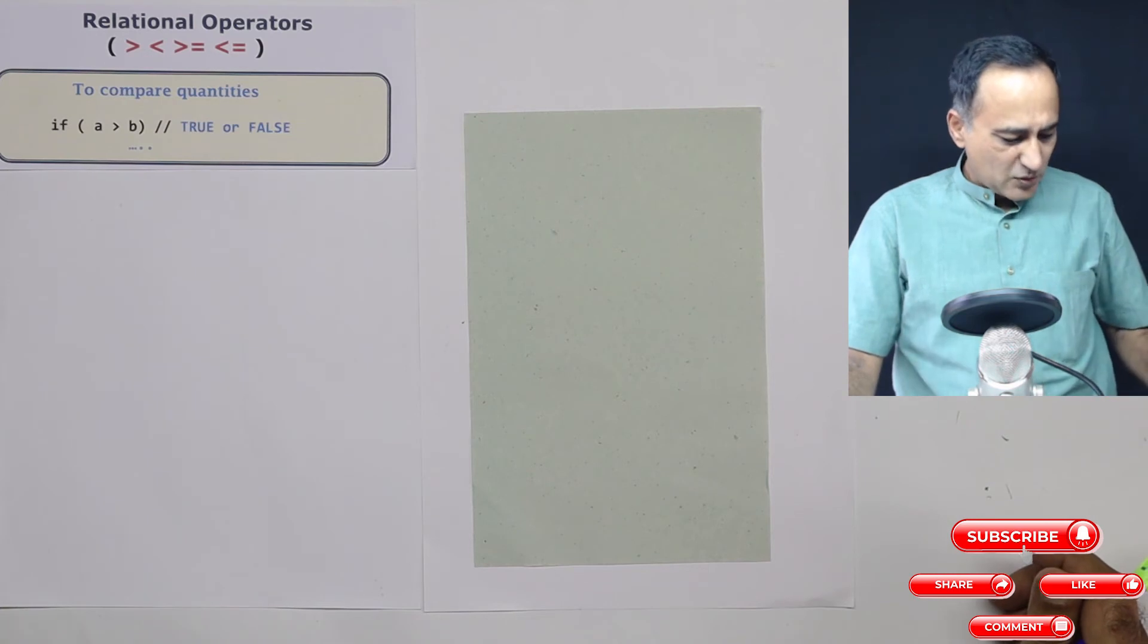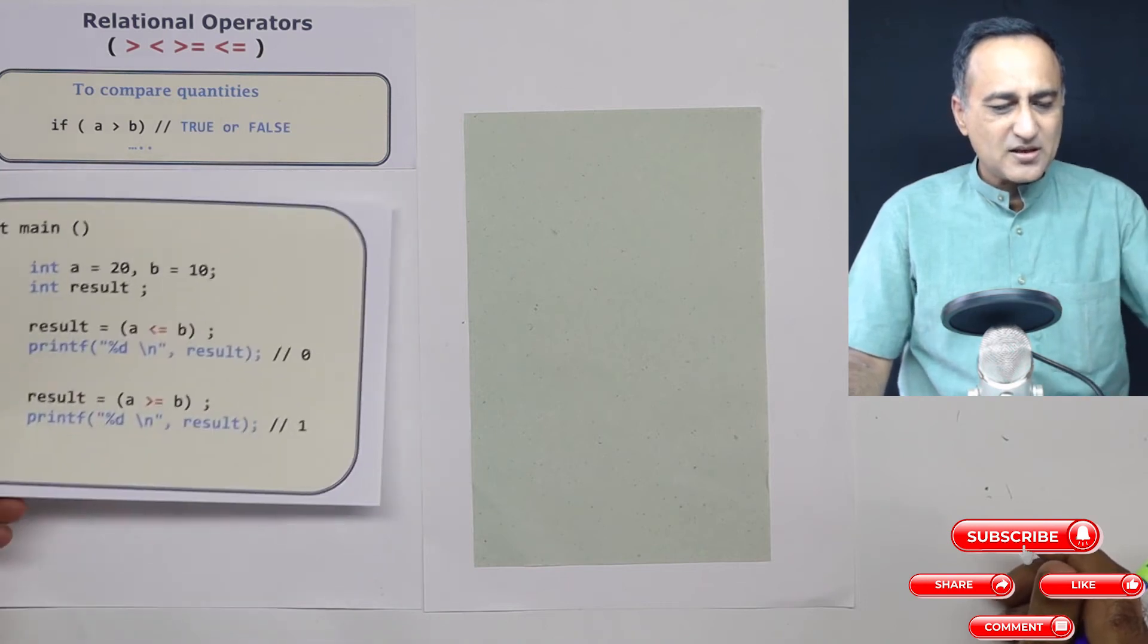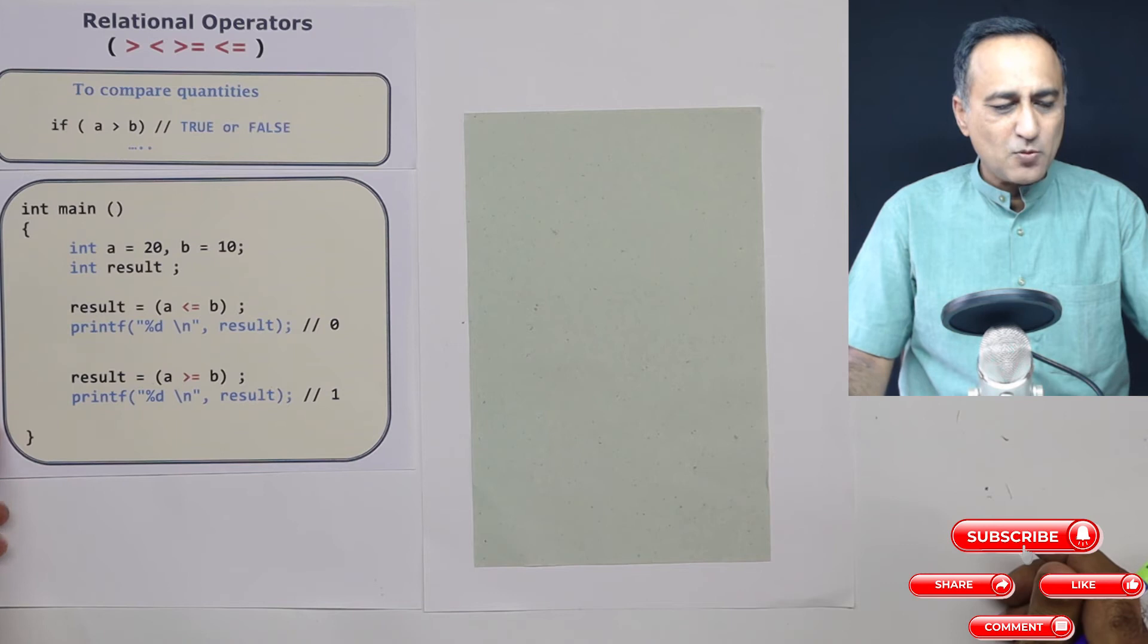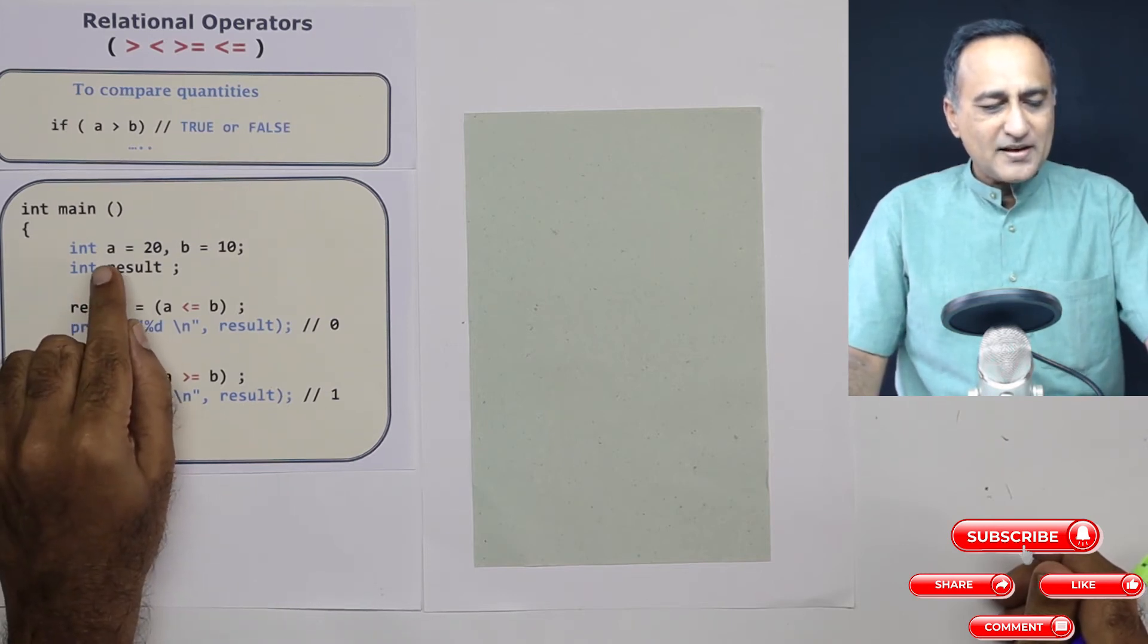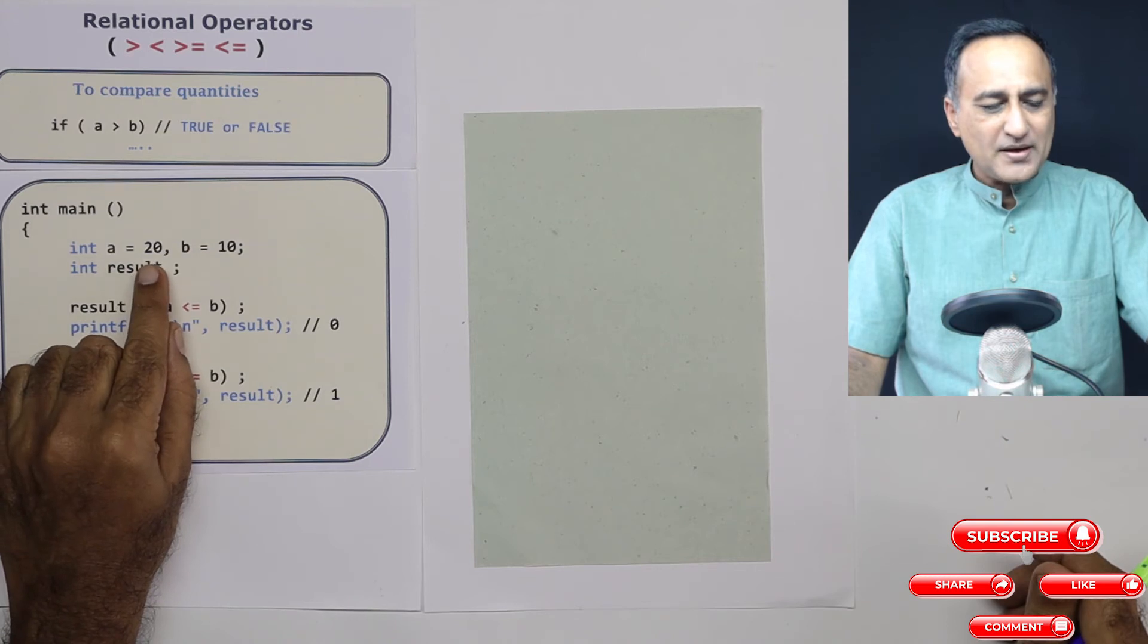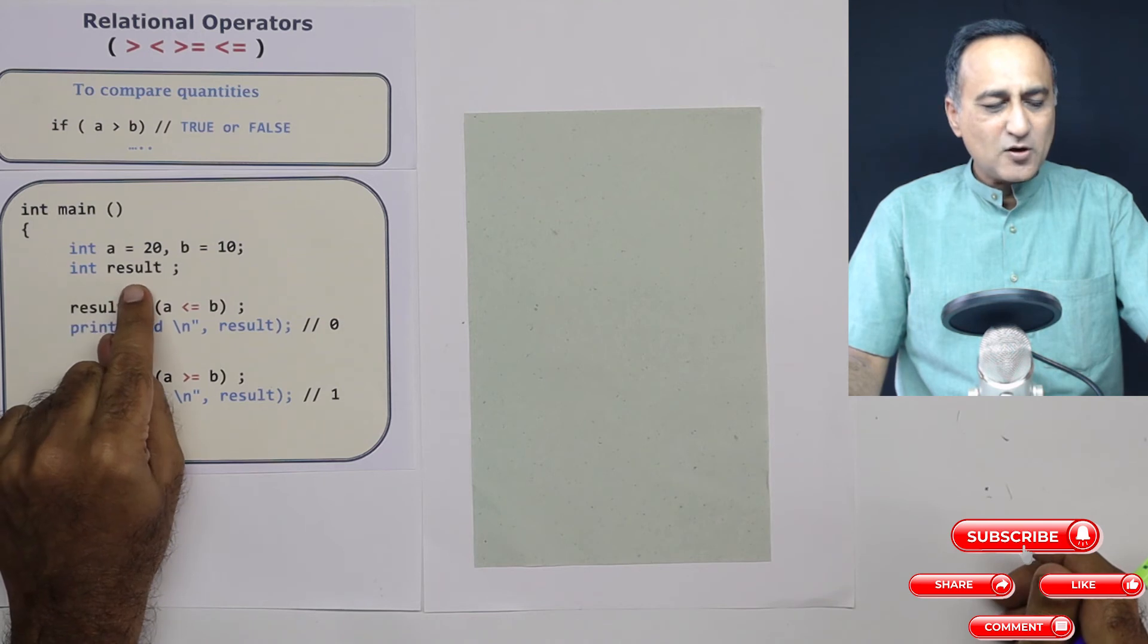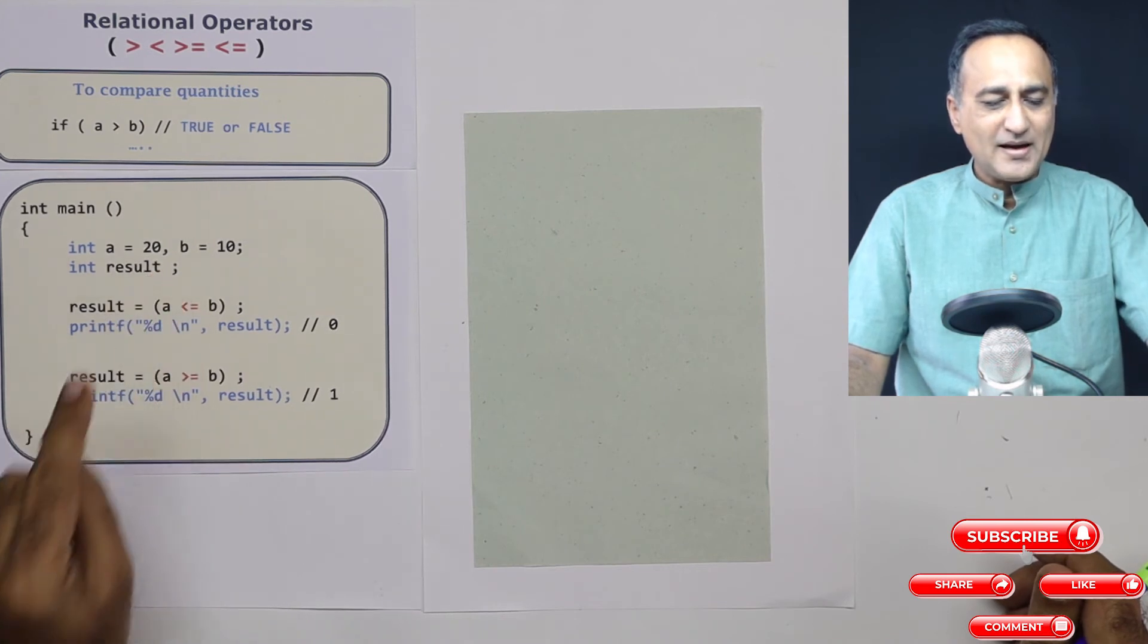So the best way to understand the relational operator is to take a look at a very simple example on its usage. So here it is, I have a small piece of code where I have defined an integer variable A is equal to 20 and B is equal to 10. Then I have defined the third integer variable called result, which is going to hold the result of the different comparisons I'm going to perform with A and B.